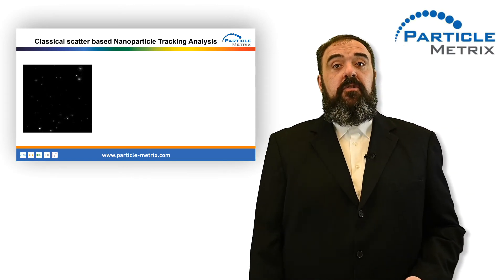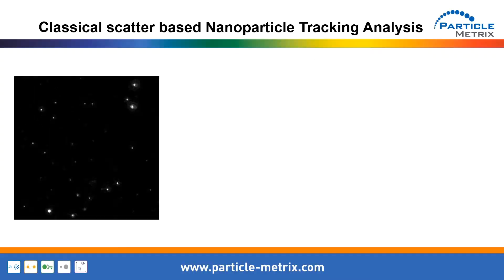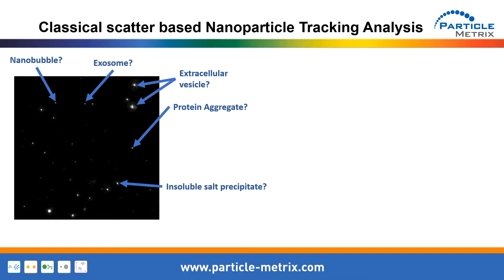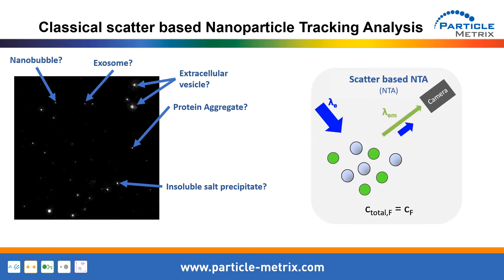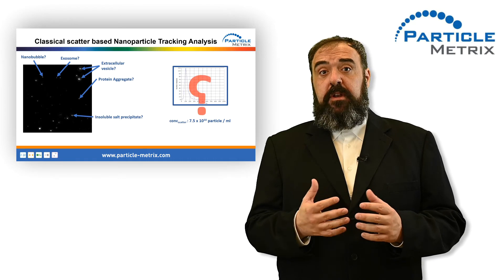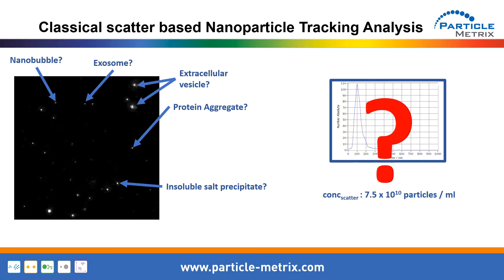This is a representative video image of a scatter-based NTA result where many people might wonder: what type of particle do I see in my sample? Is this signal really an EV or an exosome? Or is it just a nanobubble, a protein aggregate, or an unspecific inorganic salt precipitate? You simply do not know. But this is exactly how classical NTA works. All particles in a sample are illuminated by a laser, all particles scatter light which is detected by the camera and analyzed. So all particles, no matter what they consist of, are part of the analysis. It is not correct to call a size histogram containing all those unknown particles an extracellular vesicle distribution. And more importantly, if you are only interested in the vesicles in your sample, using all these signals for calculating the concentration will result in an overestimation of the real vesicle count.